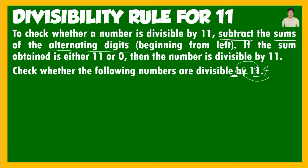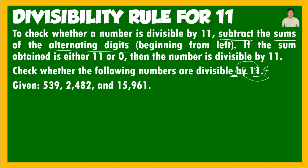Check the following numbers for divisibility by 11: 539, 2,482, and 15,961. For 539: the alternating digits starting from the left are 5 and 9, and 3 is in the middle with no partner. So: (5 + 9) minus 3 = 14 minus 3 = 11. Since the result is 11, 539 is divisible by 11.